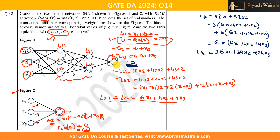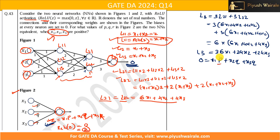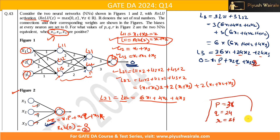This output from Figure 1 must be equivalent to Figure 2's output: x1·p + x2·q + x3·r = 36x1 + 24x2 + 24x3. Equating coefficients: p = 36, q = 24, r = 24. So this is the correct answer — option one is correct.